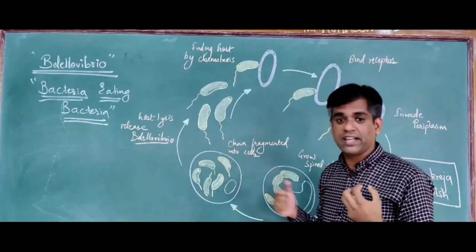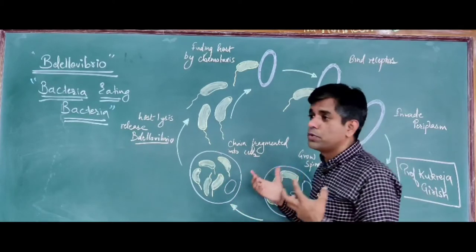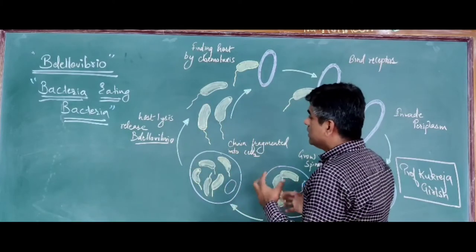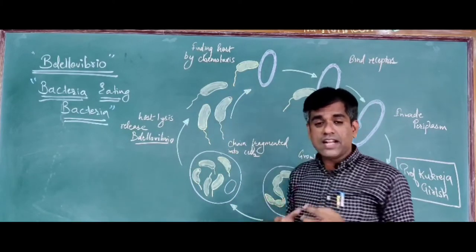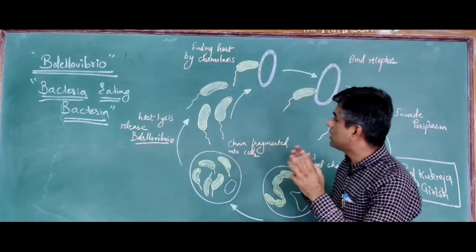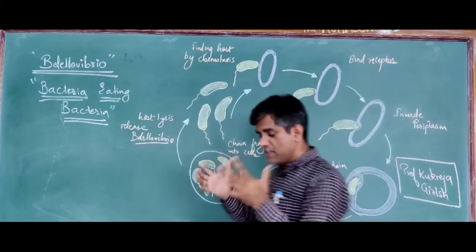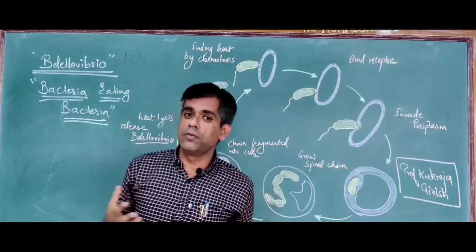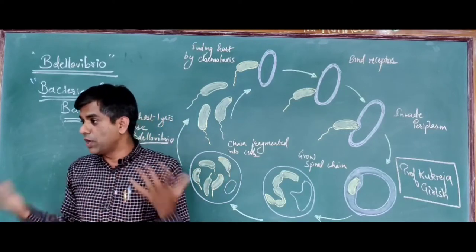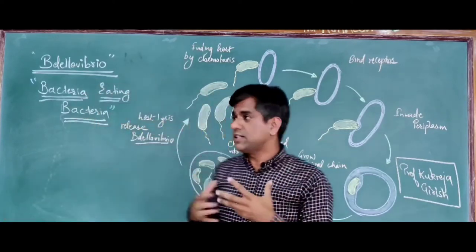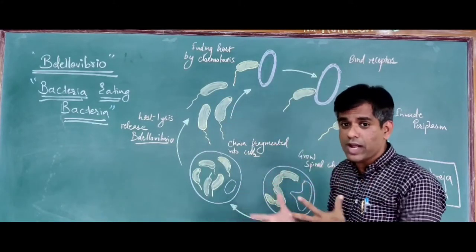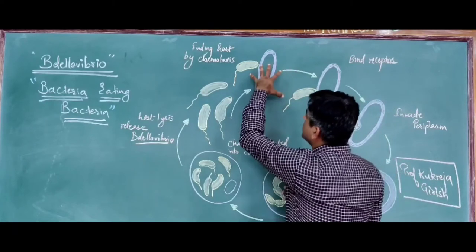You will find Bdellovibrio attacking E. coli, Pseudomonas, Agrobacterium, Rhizobium, and many other species. Whenever Bdellovibrio is in the attack phase, it occurs in a comma-shaped, sheath-flagellated form and swims really fast — a typical Bdellovibrio can swim around 100 times faster than its own length. By chemotaxis, it goes and finds its host.